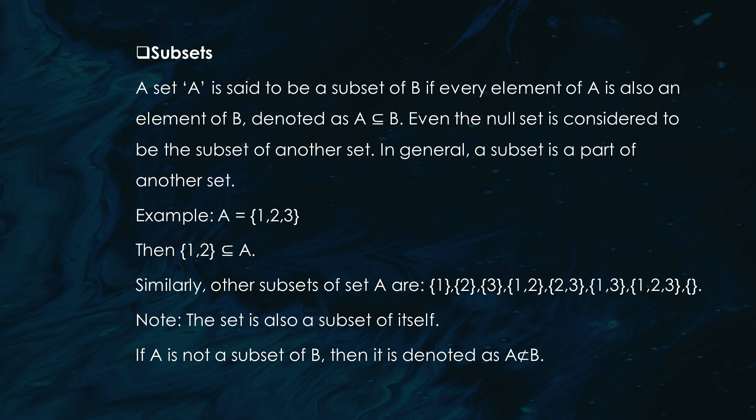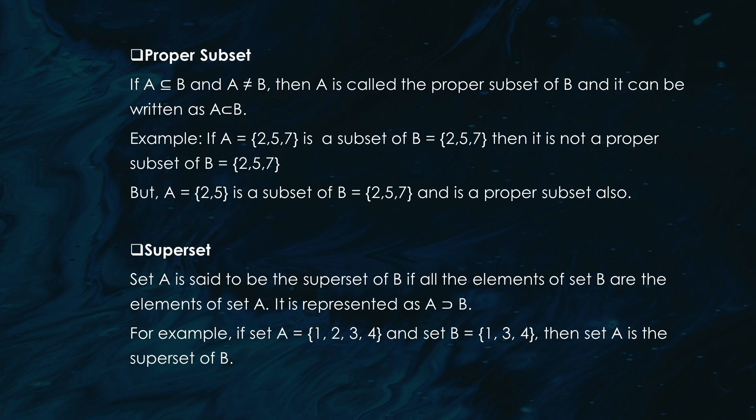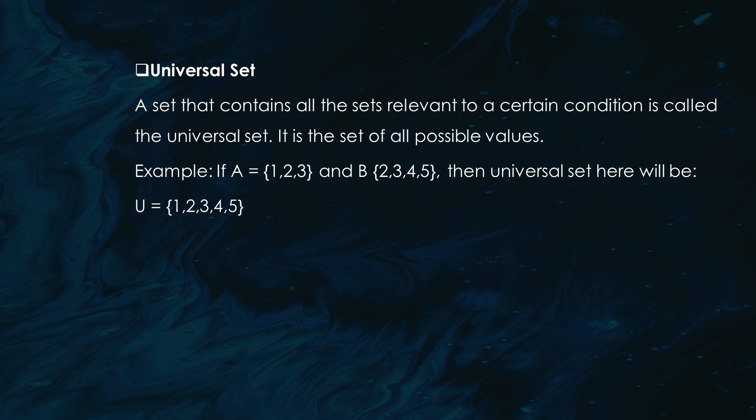A set A is a subset of set B if every element in A is also in B. Think of it like this: if you have a set of fruits and another set with just apples, the apple set is a subset of the fruit set. But if set A is a subset of B and not equal to B, then A is a proper subset of B. Conversely, if B includes all elements of A and possibly more, B is the superset of A. A universal set is the big box that contains all the sets you're dealing with — like the entire menu at a restaurant, and the sets are just your orders. Venn diagrams help us visualize how these sets relate to each other. If you've got a universal set U and subsets A and B, we can use circles within a rectangle to show what's happening. These diagrams are super handy for visual learners.